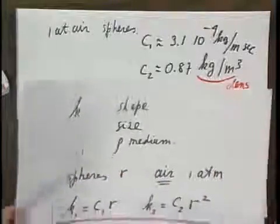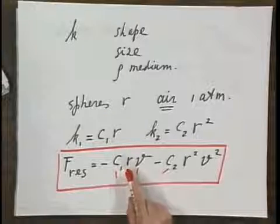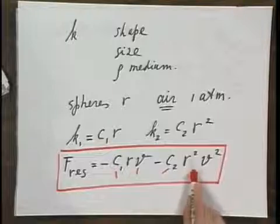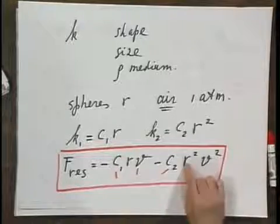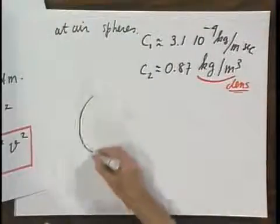Now it is not so easy to see where this term comes from, and I will not further discuss this term. This term is much easier to digest. First of all, the R squared term. If we have a sphere, this is a sphere.